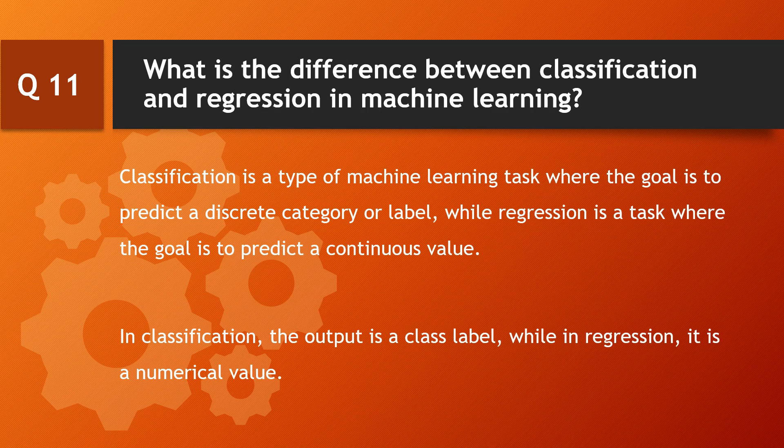What is the difference between classification and regression in machine learning? Classification is a type of machine learning task where the goal is to predict a discrete category or label, while regression is a task where the goal is to predict a continuous value. In classification the output is a class label, while in regression it is a numerical value.